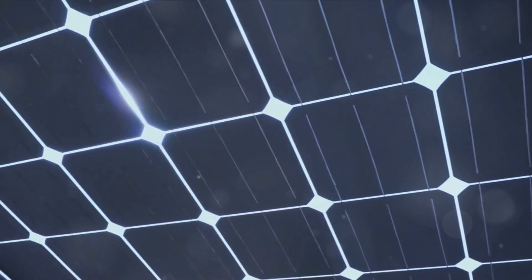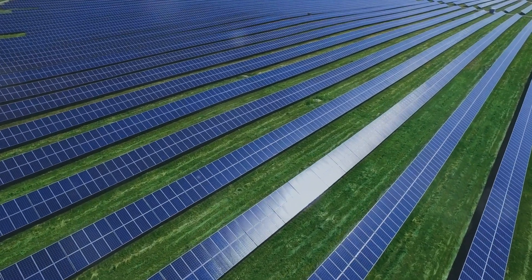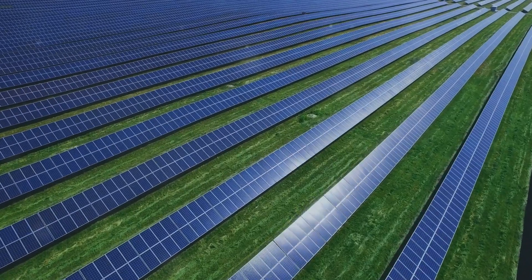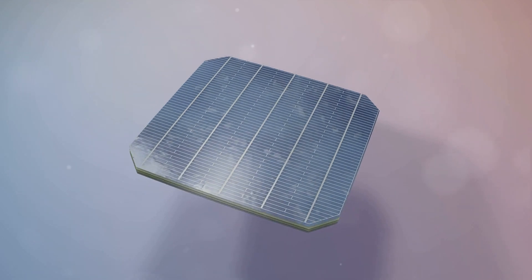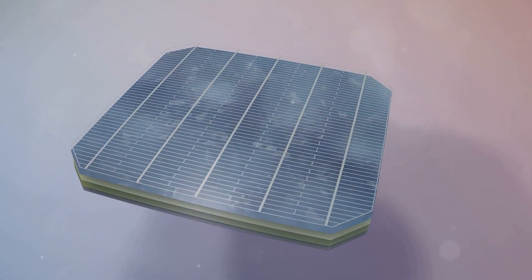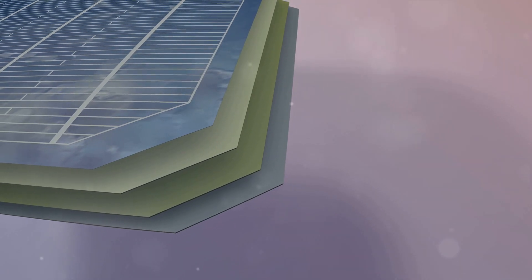At the heart of this energy conversion process are solar cells. These remarkable devices, also known as photovoltaic cells, have the ability to convert sunlight directly into electricity. They do this by utilizing the principles of the photovoltaic effect, where light striking certain materials can generate an electric current.